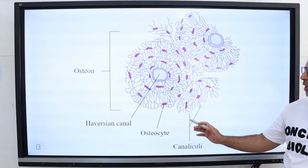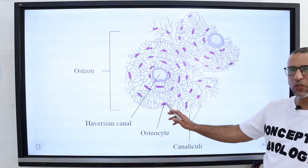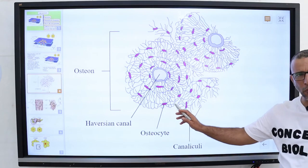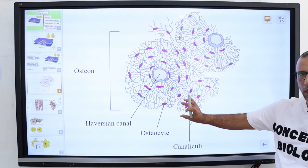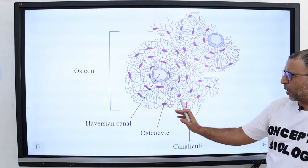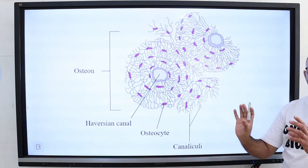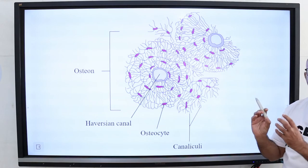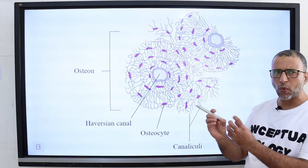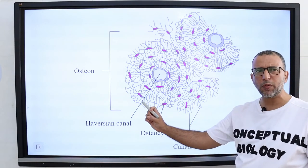Gap junctions allow osteocytes, which are living bone cells buried deep in the bone, to maintain a cellular supply line to acquire nutrients from distant blood vessels.